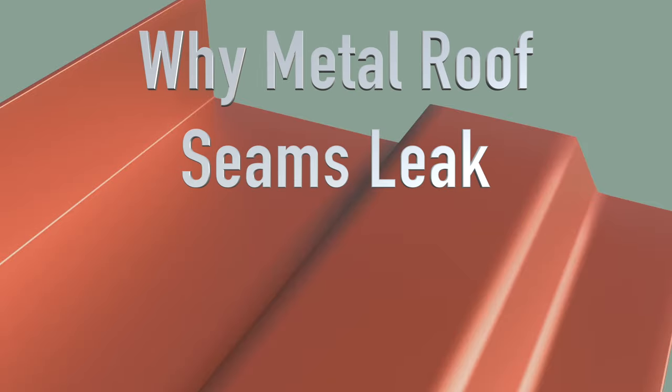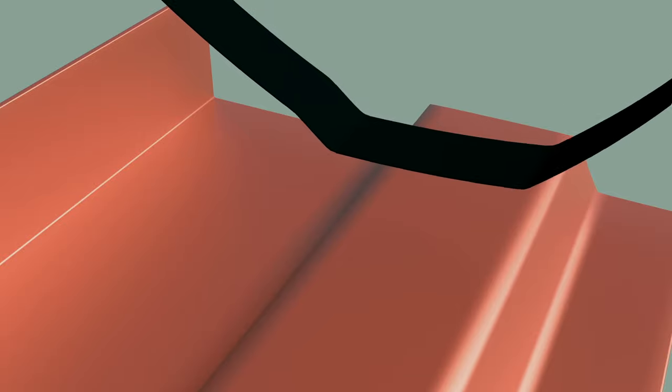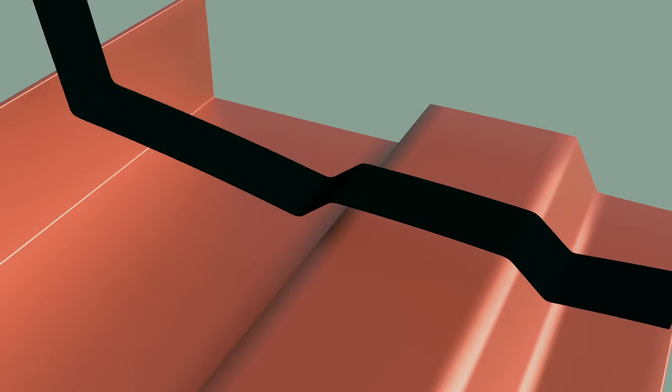This 3D video is to help you understand why metal roofs leak at the seams. First of all, when they install a metal roof, they install a gasket between the two overlapping panels.